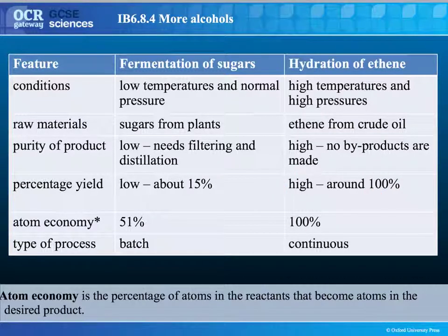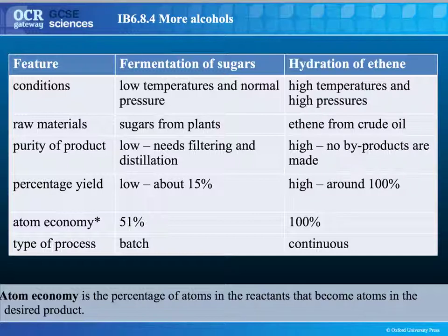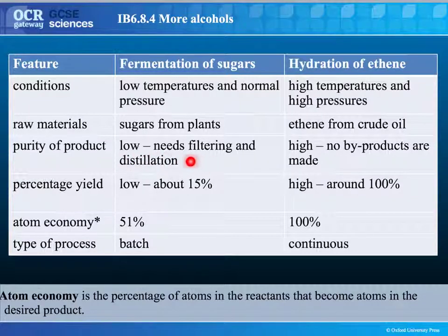If you want ethanol for chemical industry processes, then hydration of ethene is the method used. Fermentation of sugar is much more sustainable — it uses sugars grown from plants. A disadvantage is that you have to replace food crops with crops used to make bioethanol, which causes increased food prices and is a particular pressure in the developing world. However, it's a much cheaper process because it's done at low temperature and low pressure with no catalyst. The downside is low purity, requiring filtration and distillation, and the atom economy is only 51%.